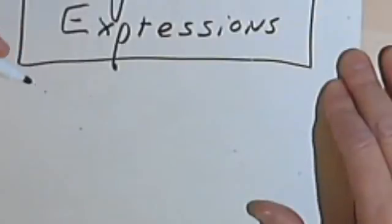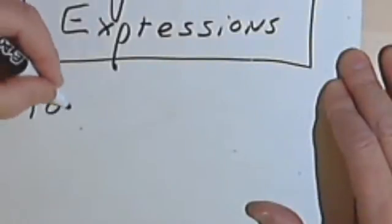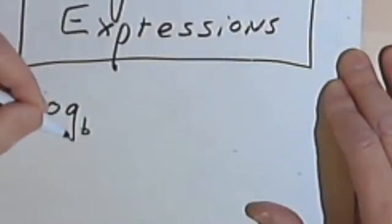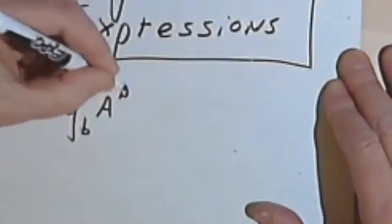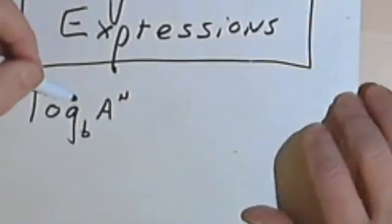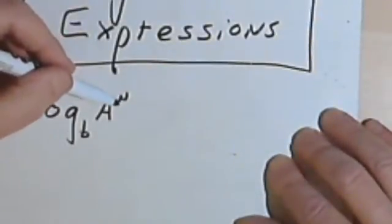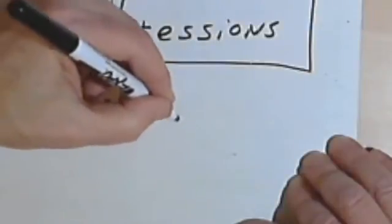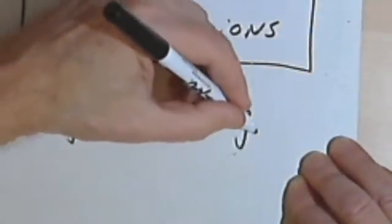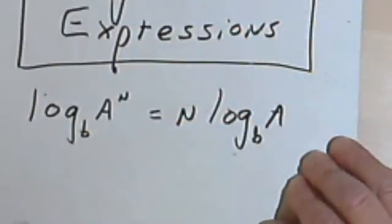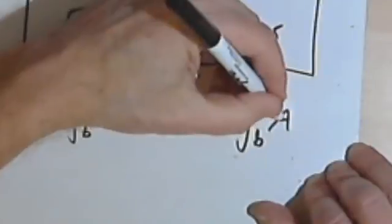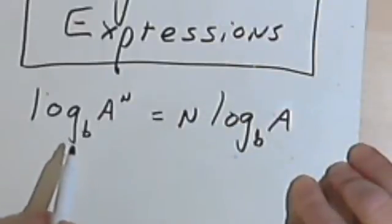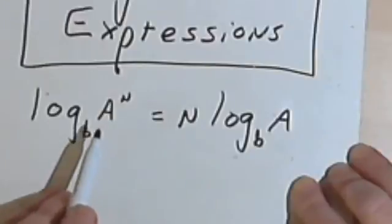The first property is called the power property, and it works like this. If I've got log base b of a raised to the n power, the power property says I can take that exponent and make it a coefficient for the rest of the logarithm. In other words, I can rewrite this as n times the log base b of a. And of course, if I've got n times the log base b of a, I can go in the other direction and rewrite that as the log base b of a to the n. So that's the power property.